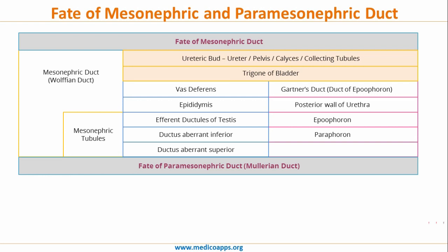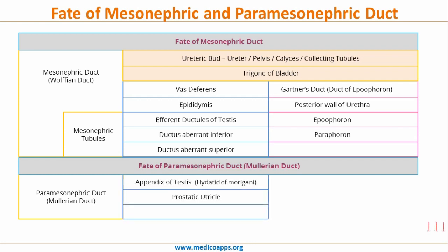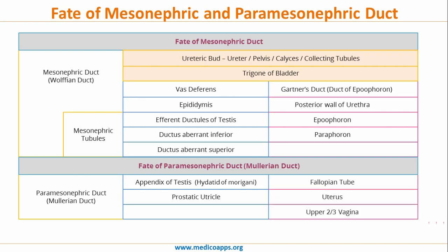The paramesonephric duct mostly degenerates in males and only gives rise to the appendix of the testis, also called the hydatid of Morgagni, along with the prostatic utricle. In females, it gives rise to the fallopian tube, uterus, and upper two-thirds of the vagina.